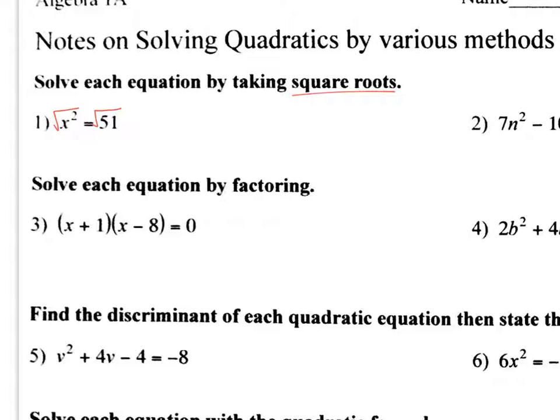Now remember, the rule is whenever you take square root, you always end up with two answers. One's a positive, one's a negative. So you get positive, negative, square root of 51. Now we've got to break down 51 if possible. So we take 51, we start listing its factors. So 3 times 17. Well, here's the problem. 3 and 17 are prime numbers. So you can't take the square root of those. So in this case, that is our final answer.